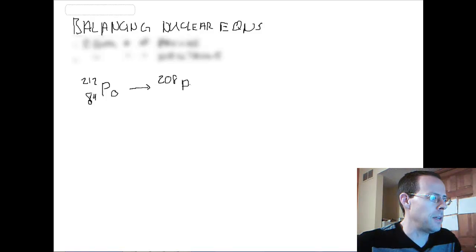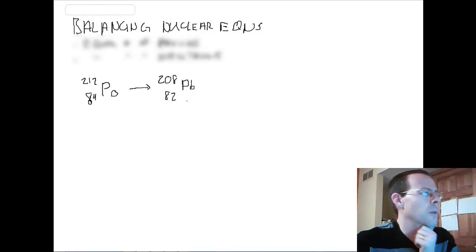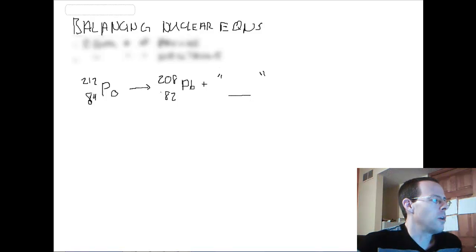If we say polonium-212 forms lead-208, lead is Pb, and if we look on the periodic table, it is 82. It's really the last element that's considered not radioactive. So if we go back and see what we have to do, we want to say what else is formed. We're going to fill in what thing goes right there. If we look on this side, notice we have 84 protons on the reactant side and 82 protons on the product side.